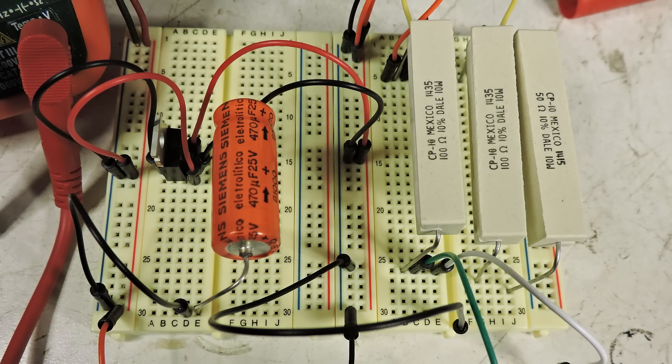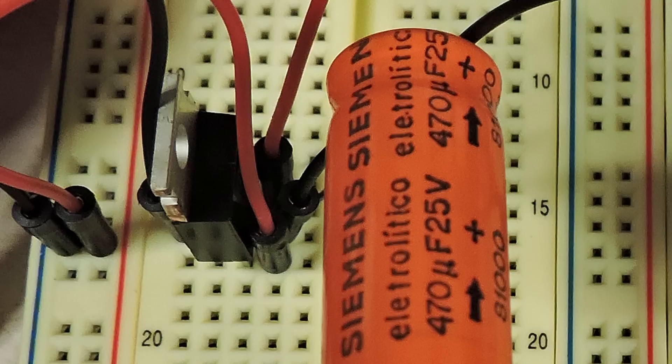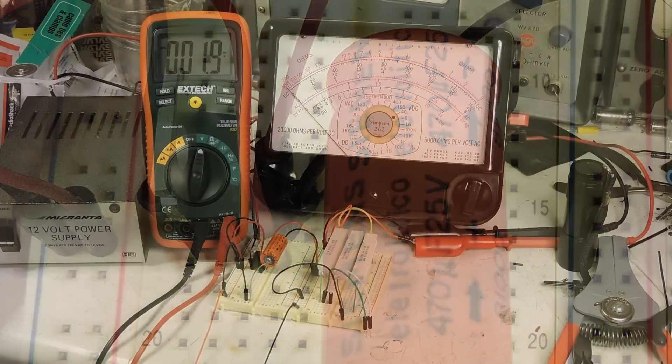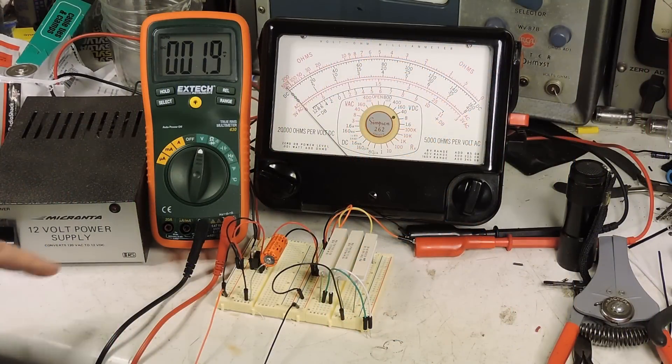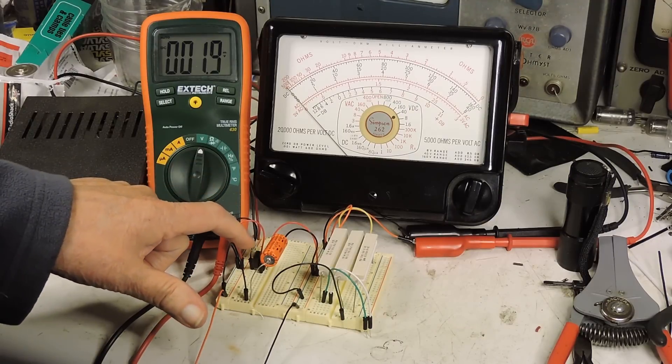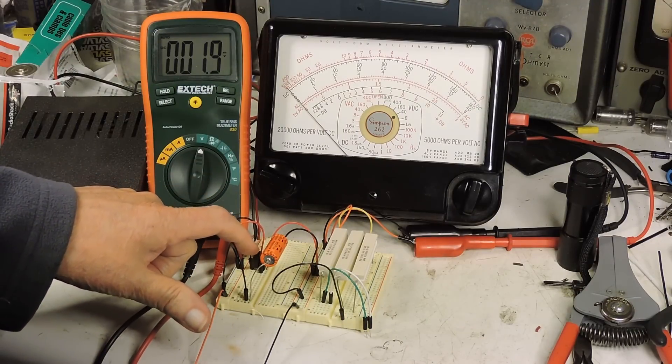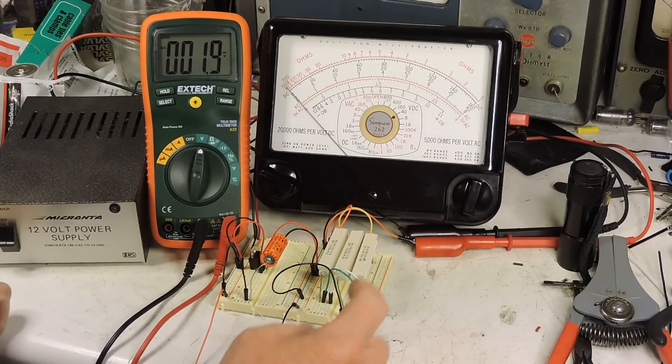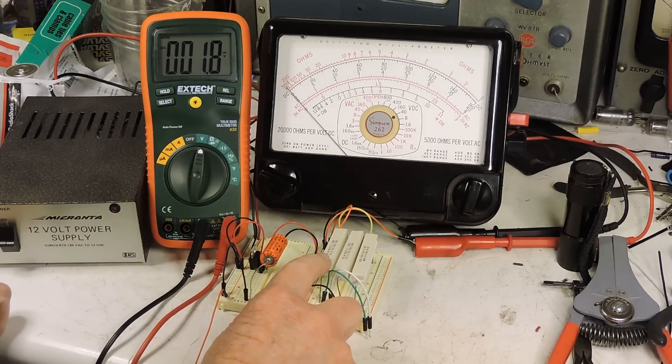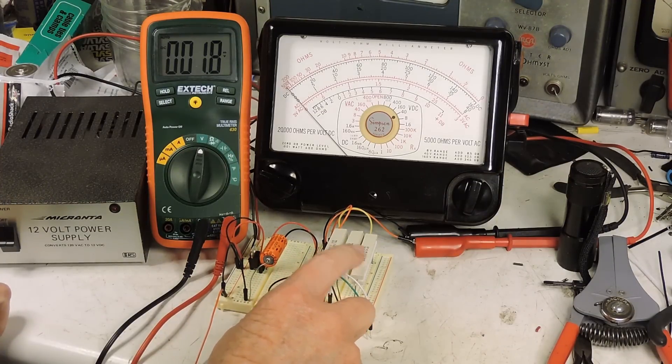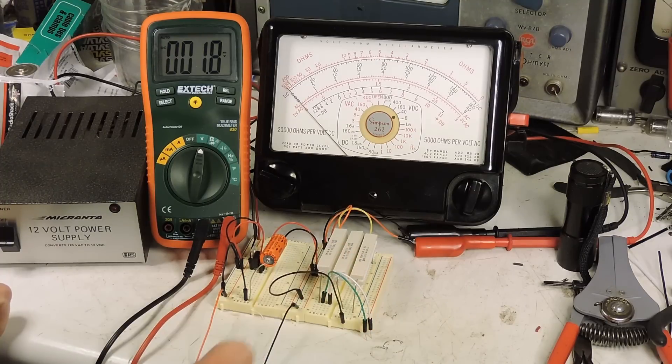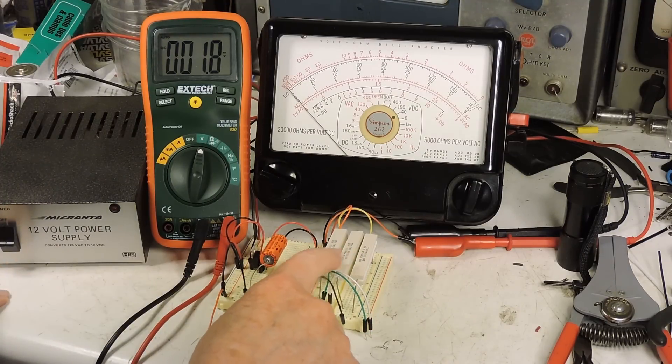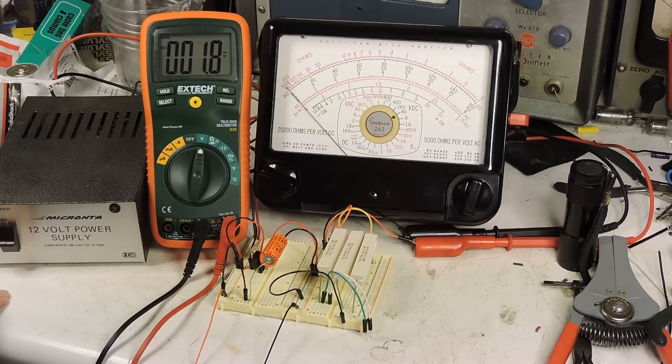This is the setup and on the left is the regulator. Here's a closer look. Okay I've got my regulator right here and I've got three resistors here, 100 ohms, 100 ohms and 50 ohms. And they're all eventually going to be hooked up in parallel.